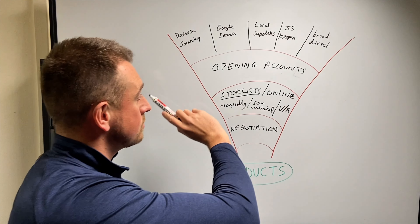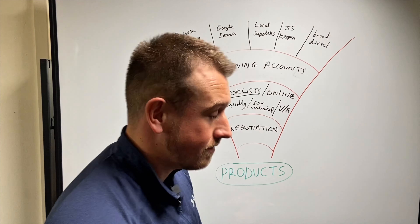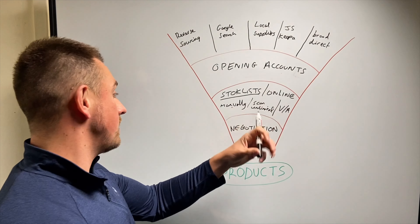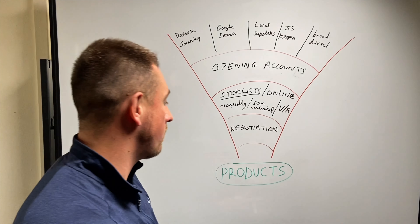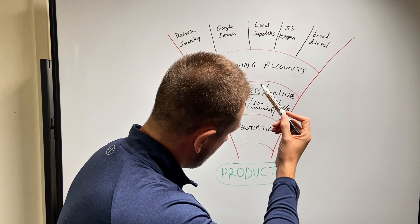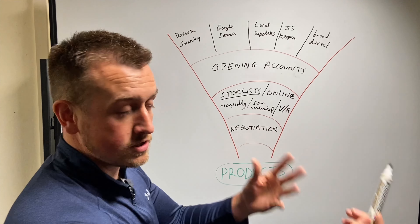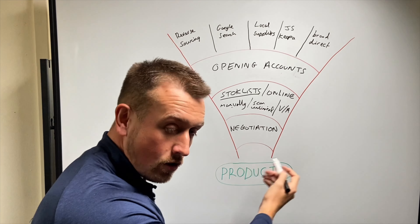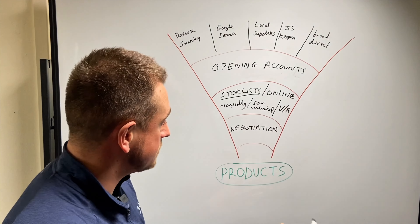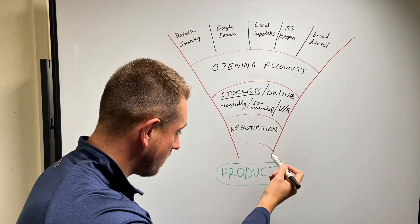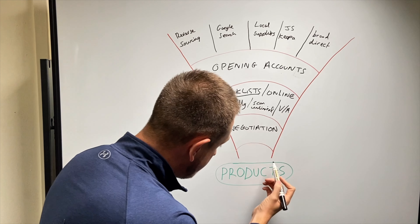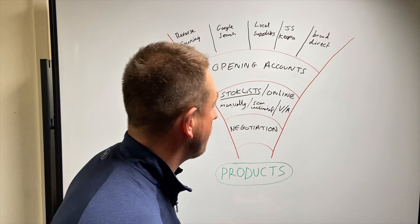So: step one, find suppliers. Step two, open accounts. Step three, go over your stock list, look at the products online, identify the products you like, and then negotiate the price as best you can. Sometimes you're not going to be able to when you're first starting. But at the end, you're going to have products.